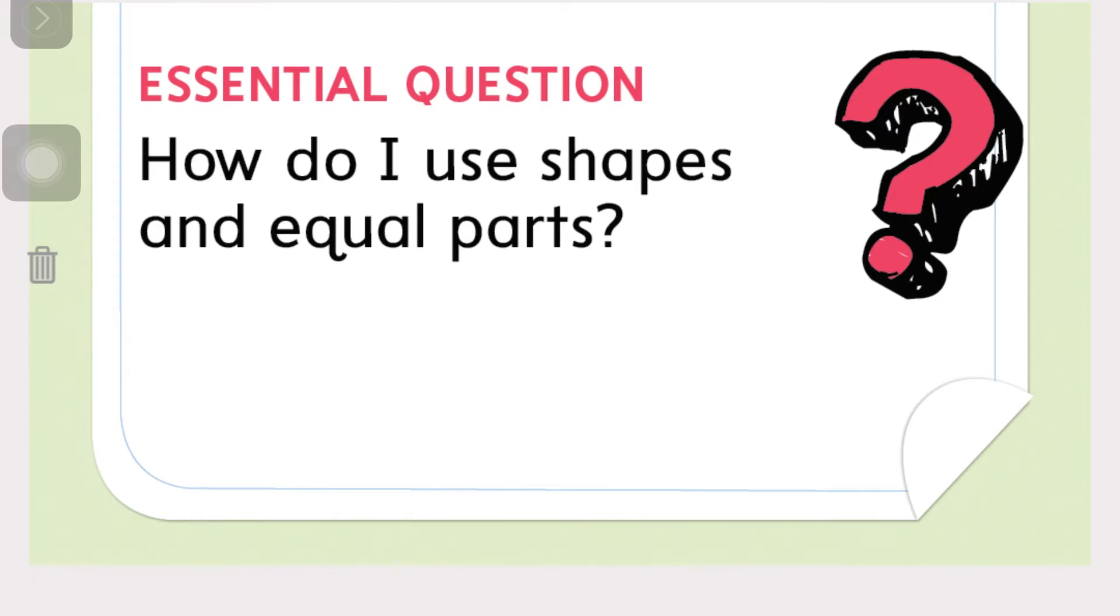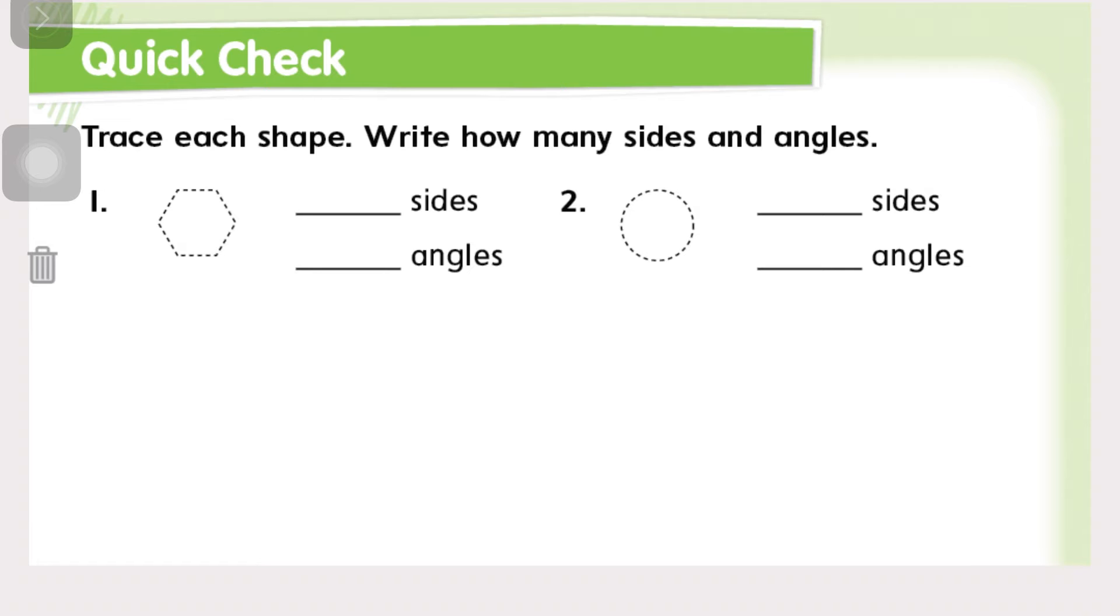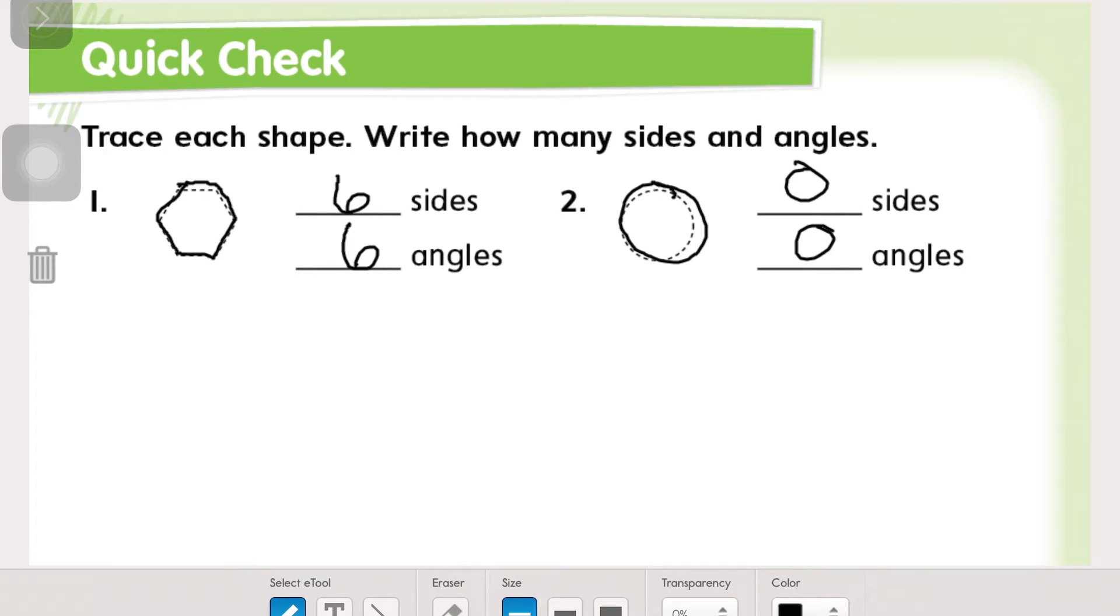So we are going to think about our essential question still. How do I use shapes and equal parts? And for our quick check, we're going to trace these shapes. So let me do that real quickly. This is a hexagon. It has six sides and we know if it has six sides, it has six angles. Here's a circle, zero sides, zero angles.